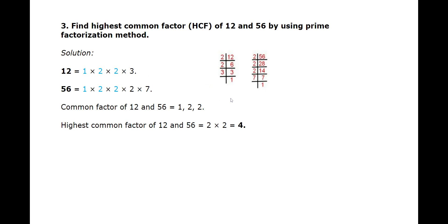The next number is 56. Again, we divide it by prime numbers — that is, we are doing prime factorization. We get the factors of 56, which are 1 × 2 × 2 × 2 × 7. So the common factors of 12 and 56 are, as we can see the numbers in blue, 1, 2, and 2. So the highest common factor of 12 and 56 is the product of those common factors, 2 × 2, which equals 4.